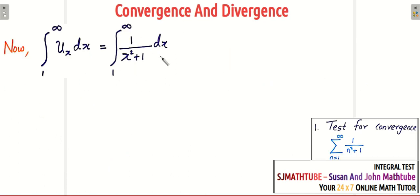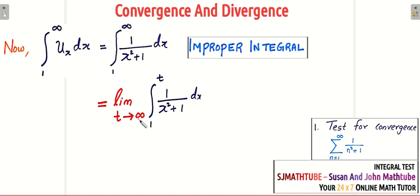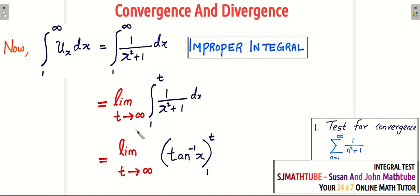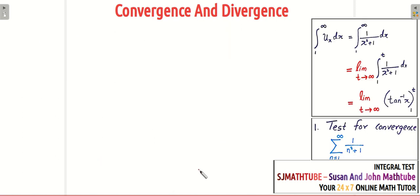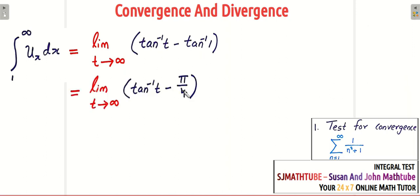I hope you remember the formula: the integral of 1/(x²+1) is tan inverse x. Since this is a type 1 improper integral, we replace infinity with a limit variable. We integrate normally and apply the formula. Putting in the upper limit T and lower limit 1, we get tan inverse T minus tan inverse 1. Since tan(π/4) = 1, tan inverse 1 = π/4.